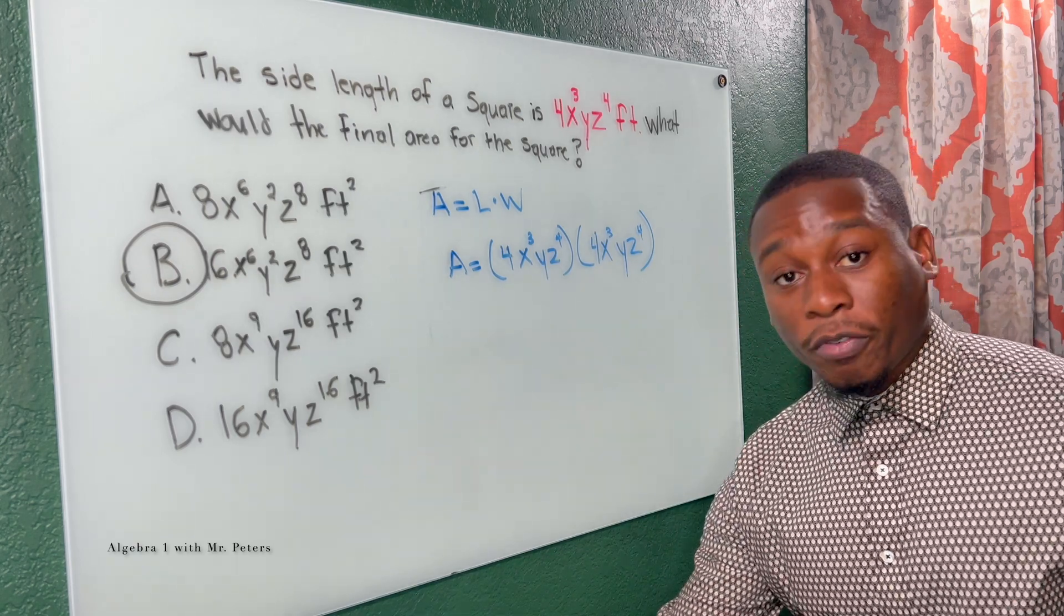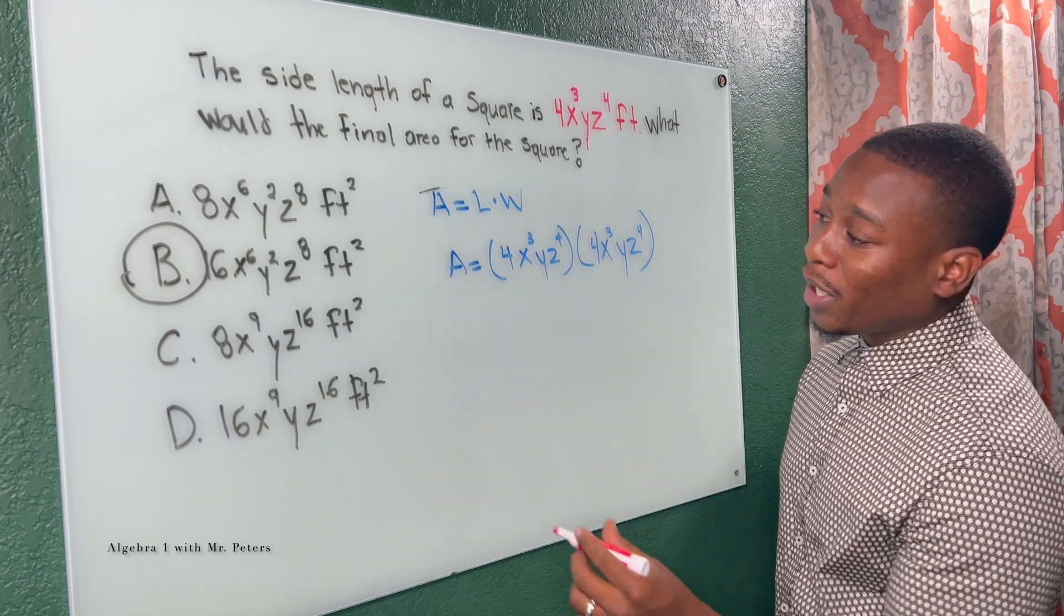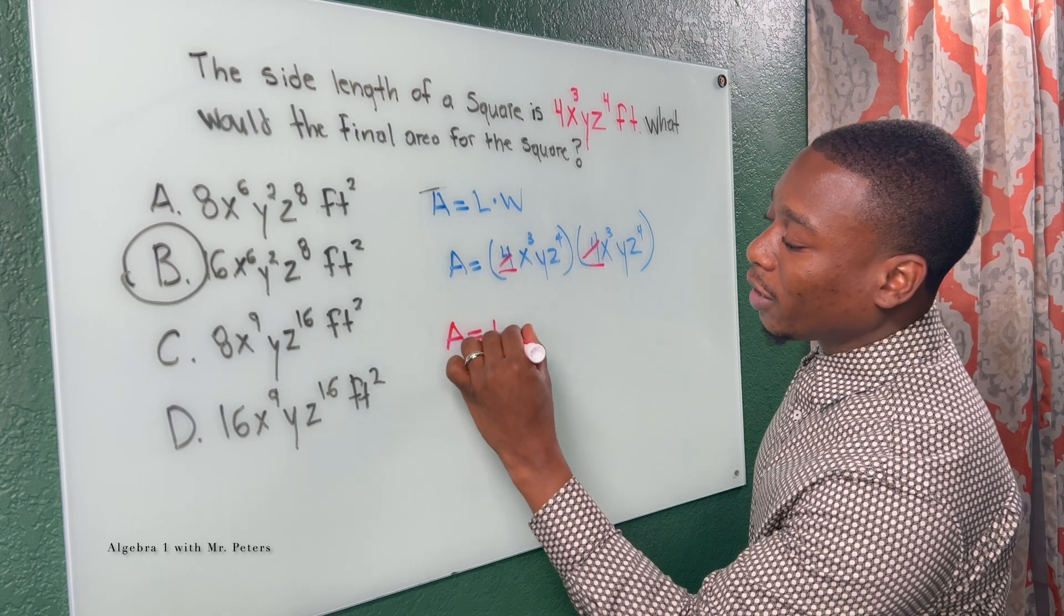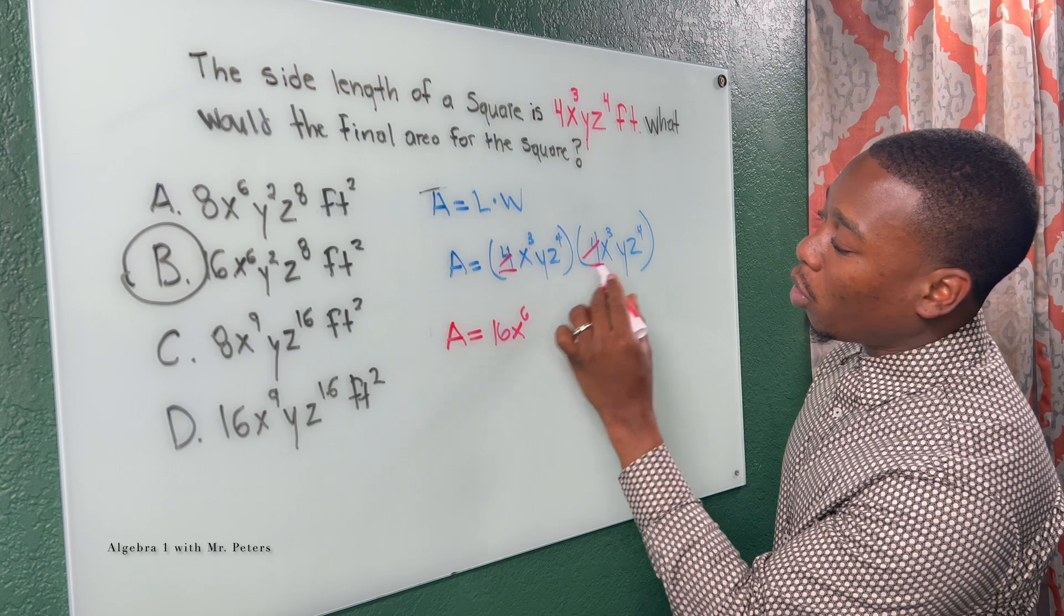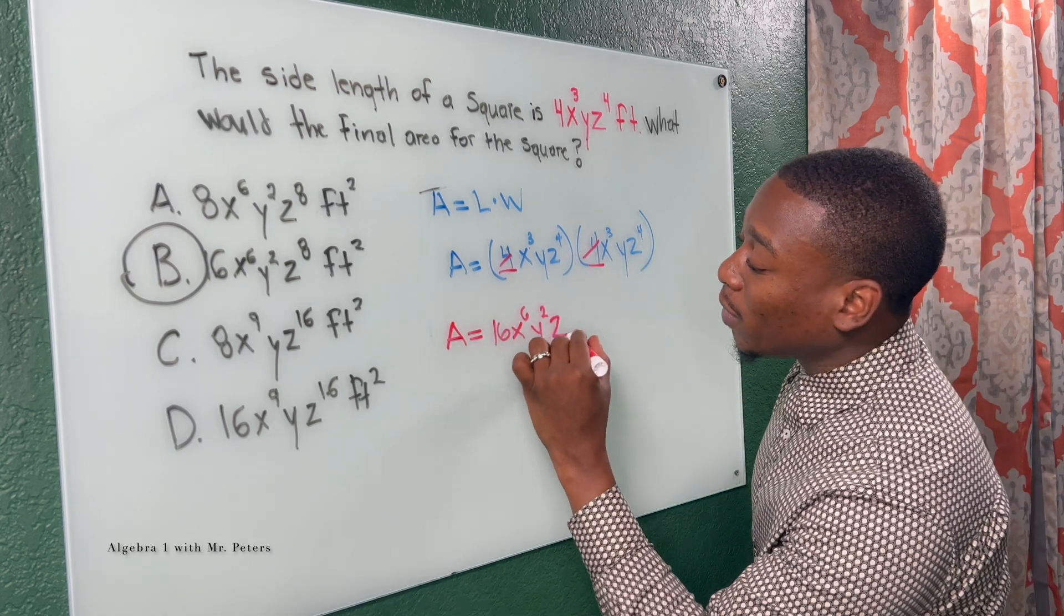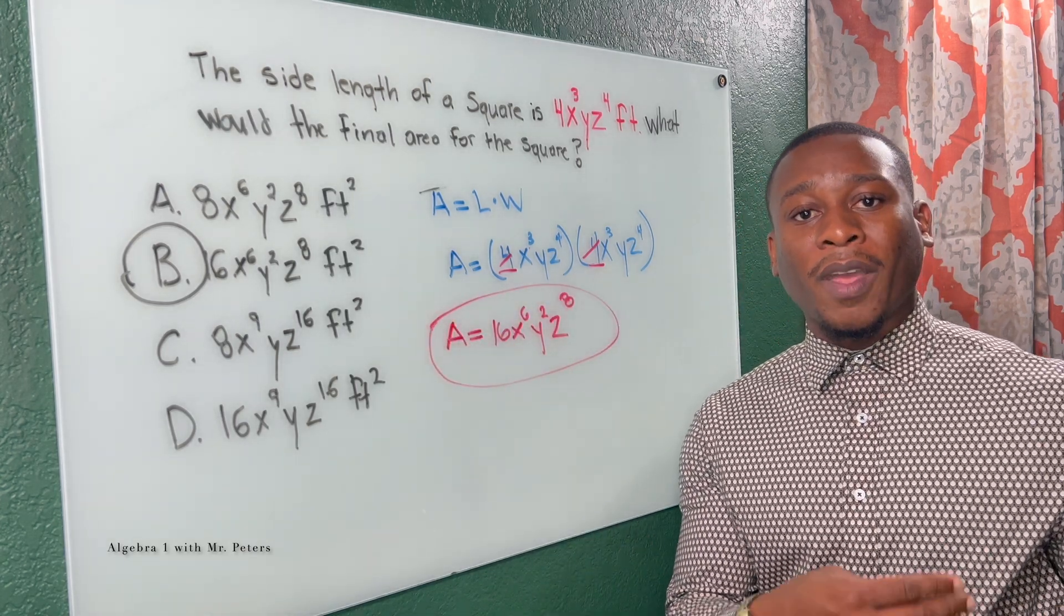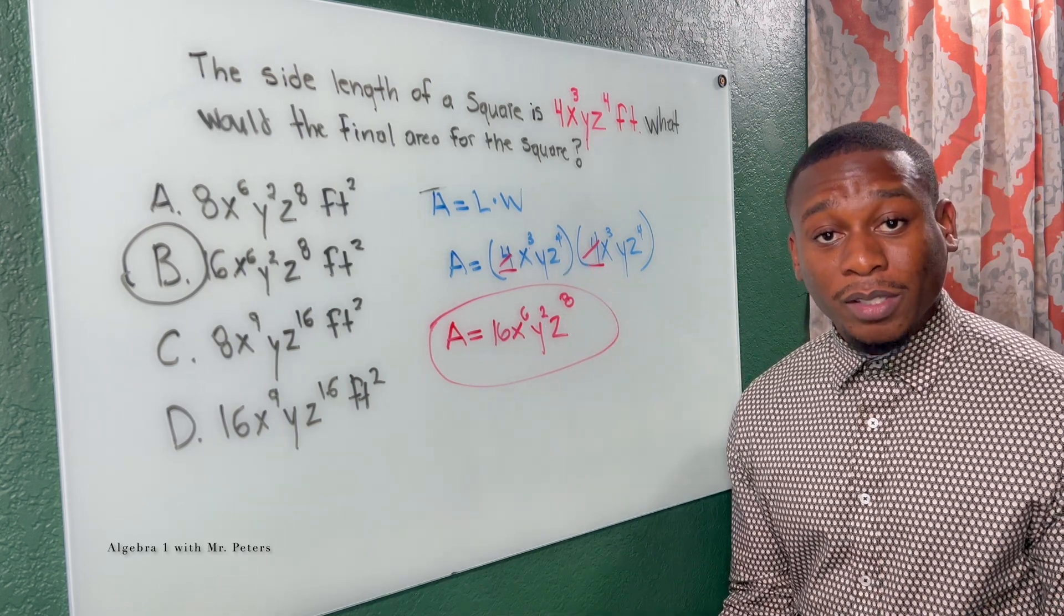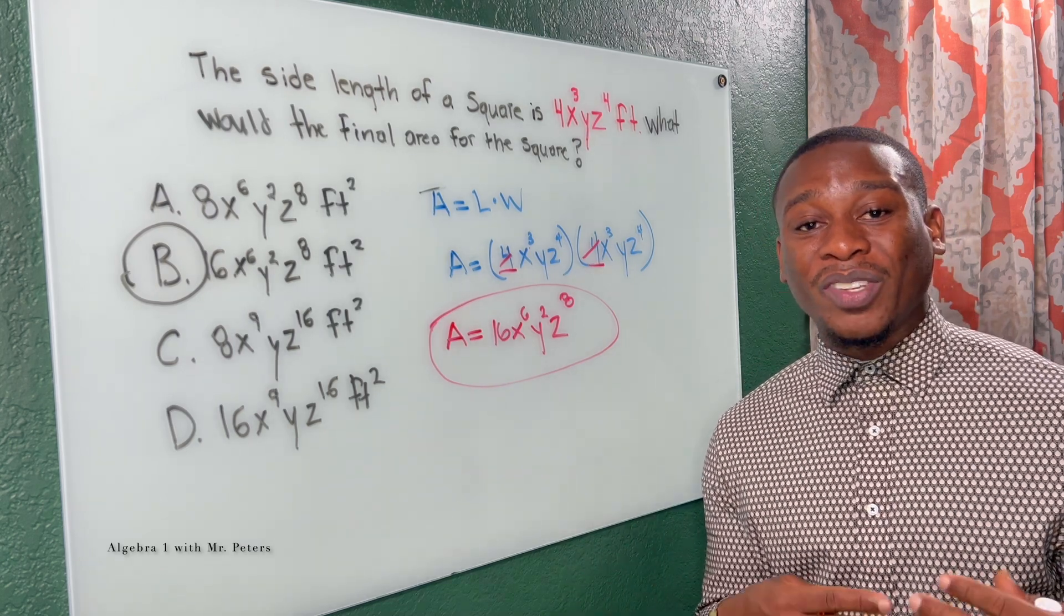And then now we're following properties of exponents where we're going to add our exponents that have the same base. So now we look at four times four is 16. Three plus three gives me X to the sixth. One plus one gives me Y squared, and four and four for Z gives me Z to the eighth. So let's say you didn't remember the first method of S squared and you wrote it like this. Just remember your properties of exponents, when to multiply the exponents versus when to add them when they have the same base.